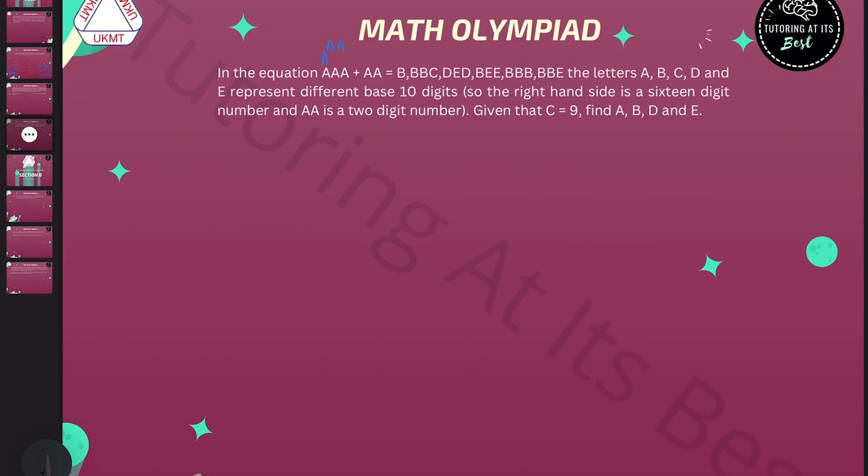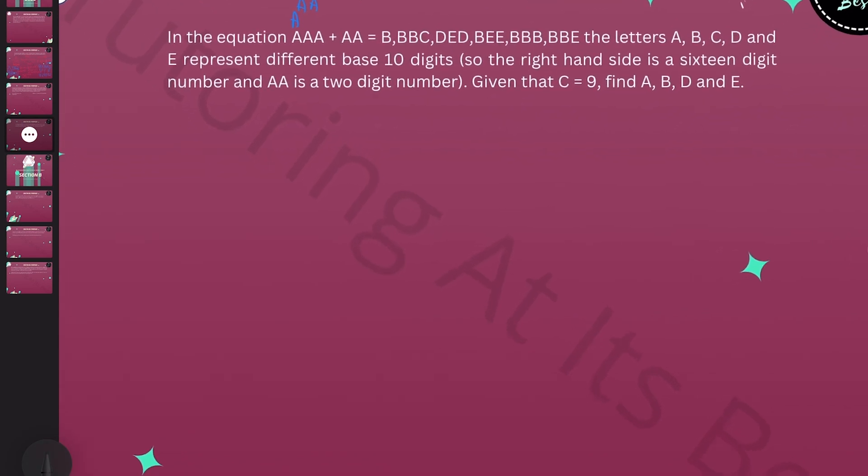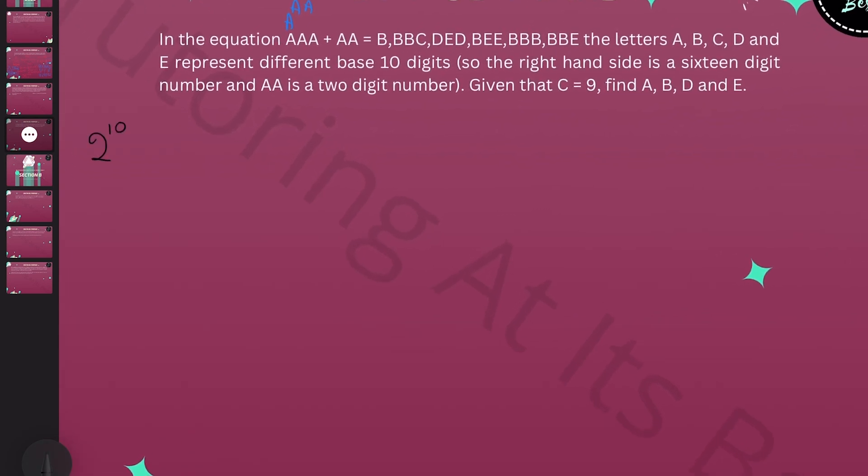So let's start by getting a feel for how big A is. It's a useful fact to know, not just for BMO but in life, that 2 to the power of 10 is equal to 1024. We're going to use this to investigate the possibilities for A. Let's start by thinking about how big 2 to the 22 is. Well, this would give us 2 squared times 2 to the 10 squared, and that's about four million.